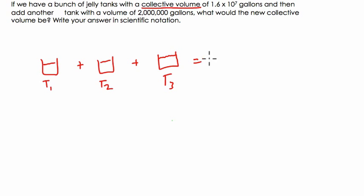The total volume would be 1.6 times 10 to the 7th gallons. Think about that as 10 millions, right? 10 to the 7th is in the 10 millions place. So over 1.6 groups of 10 million. This is our total amount of gallons.